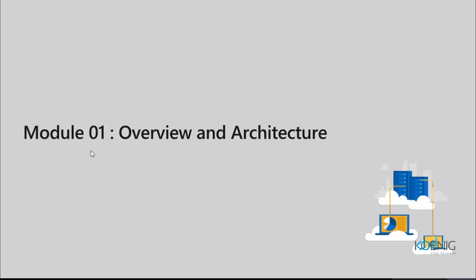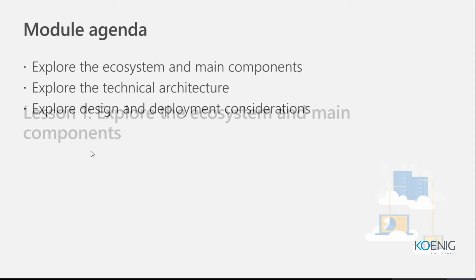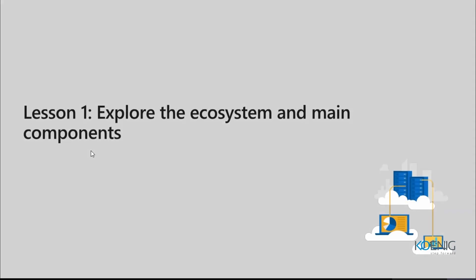We have 10 modules in total. We're going to start with module number one, which is the overview and architecture. In this module, we are going to explore the ecosystem, the main components, technical architecture, the design, and deployment considerations.